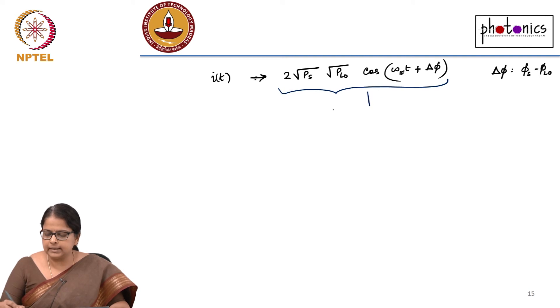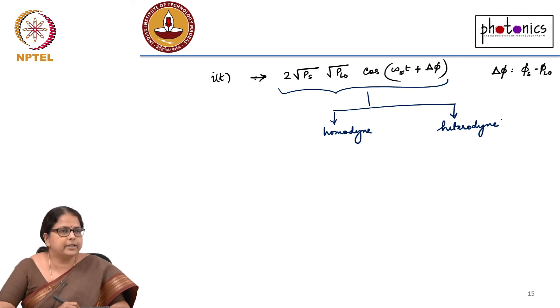You can do this detection as homodyne or you could do it as a heterodyne detector. In homodyne detection, your ω_IF is 0, whereas in heterodyne detection, ω_IF ≠ 0. That is the difference.